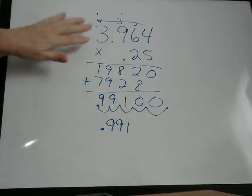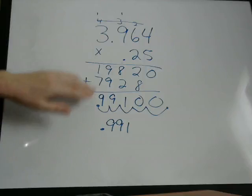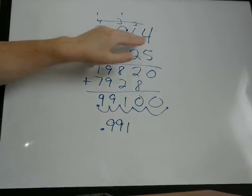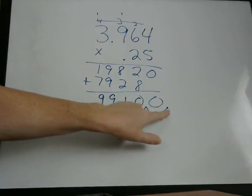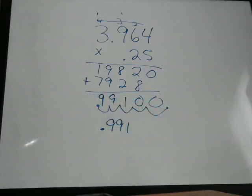So when you multiply decimals, just do the multiplication. When you get to your answer, count how many digits are behind the decimal or to the right of the decimal in everything that you're multiplying, and that's how many times you're going to move the decimal point in your answer to the left to get a final answer.